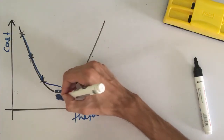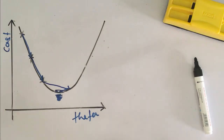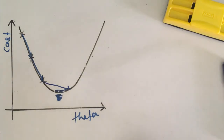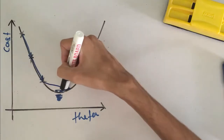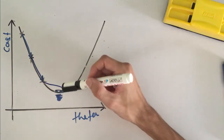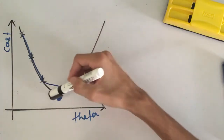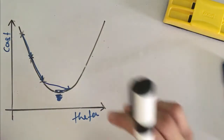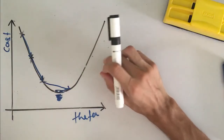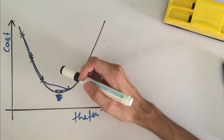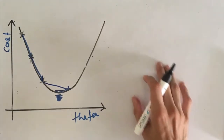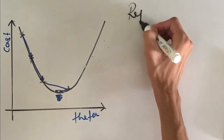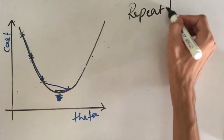With the gradient descent algorithm, we are taking steps like this to reach the minimum. As we are taking steps we are never going to converge exactly at the minimum, but we are going to oscillate in the region very close to that minimum — and that serves our purpose.